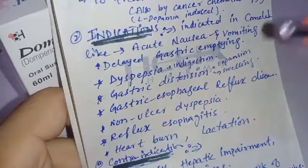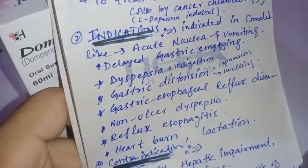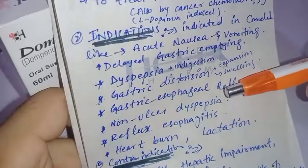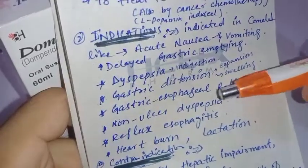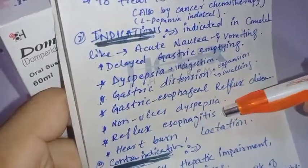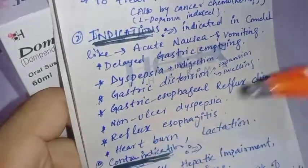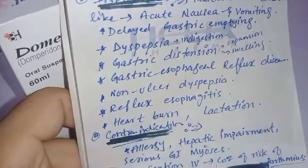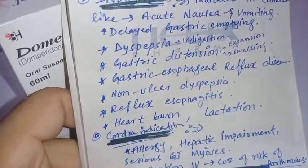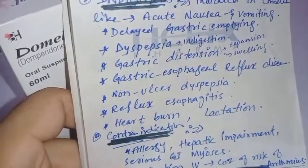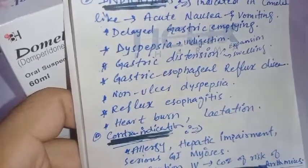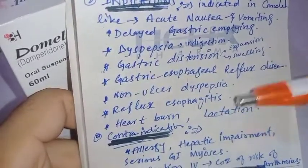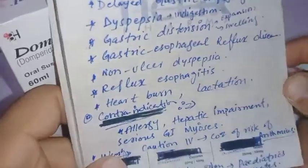Reflux esophagitis occurs when acidity reflexes from the stomach go into the esophagus, leading to inflammation of the esophagus. This is called reflux esophagitis and it can also cause heartburn. Domperidone can also be indicated for lactation support in mothers who are breastfeeding.